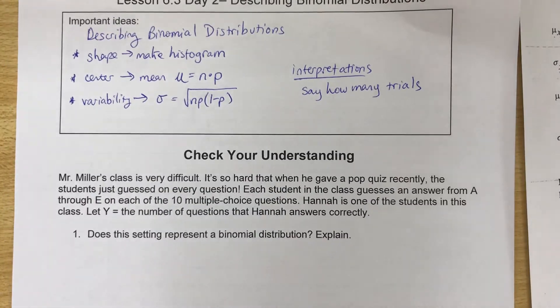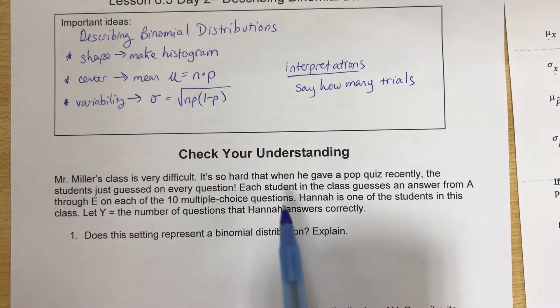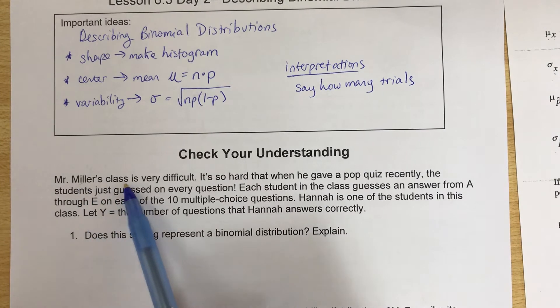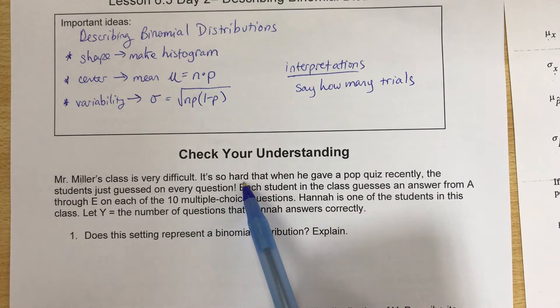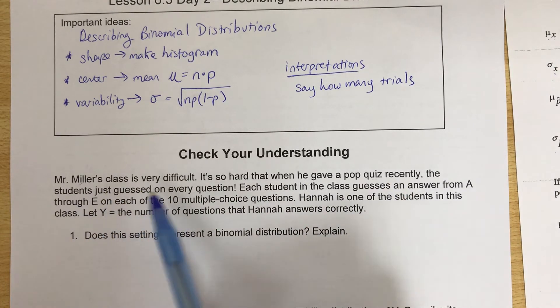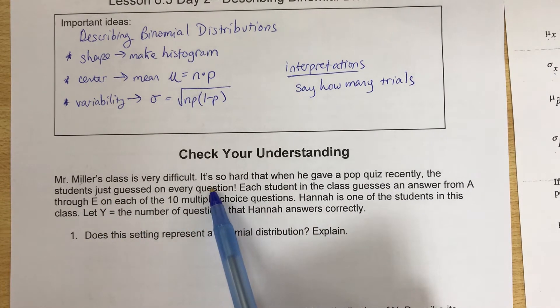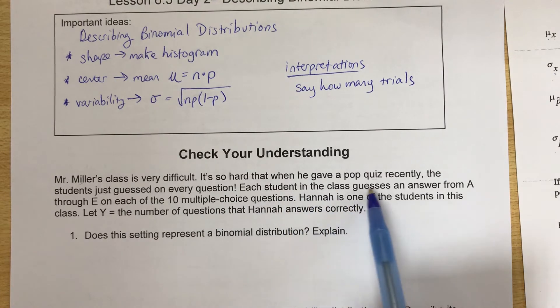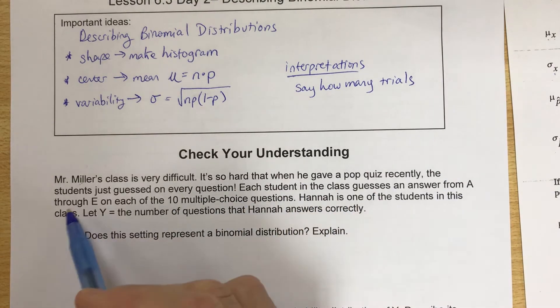Okay, so let's do an example here. Check your understanding. Mr. Miller's class is very difficult. It is so hard that when he gave a pop quiz recently, the students just guessed on every question. Each student in the class guesses an answer from A through E.